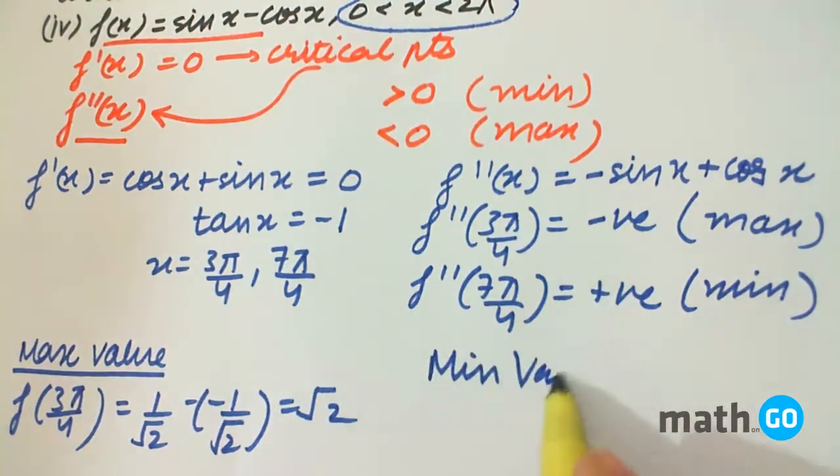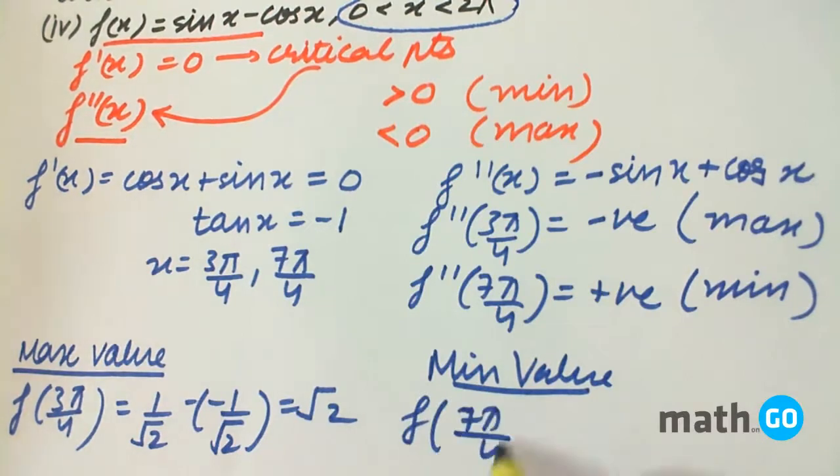And the minimum value as f(7π/4), that is minus √2, as we get after calculations.